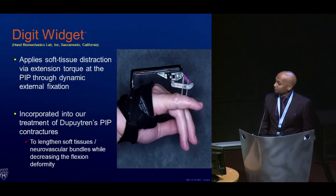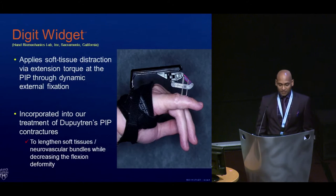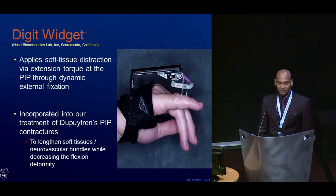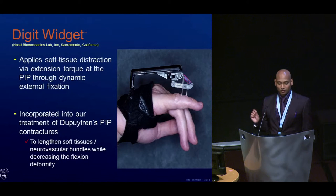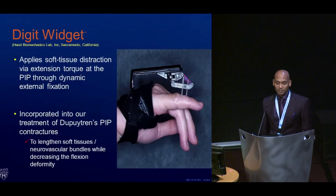The digit widget looks like this. It's basically a dynamic soft tissue distraction device that provides an external load — an extension force — on the PIP joint.